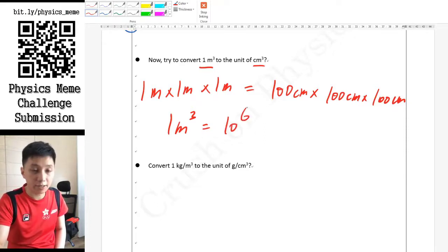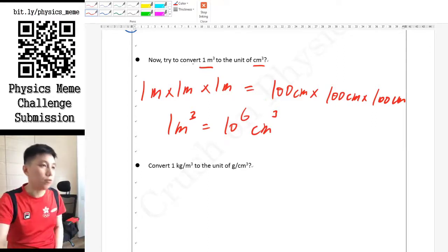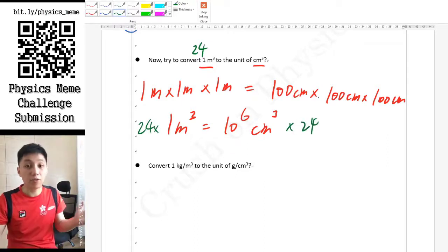That means if you want to find a random volume, let's say 24 meter cube, then you just have to multiply 24 on both sides, depending on your needs.